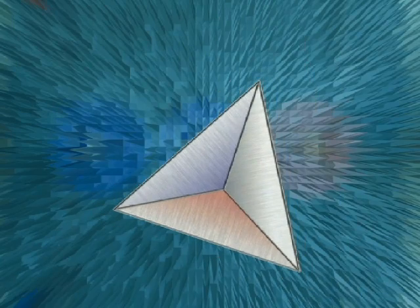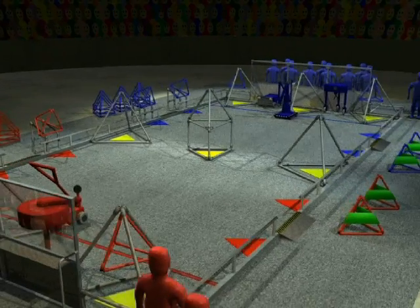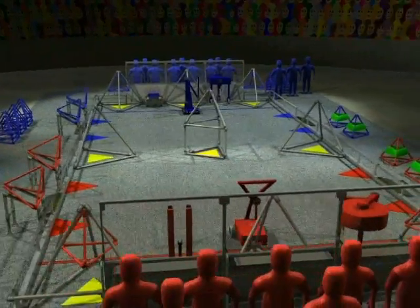Welcome to the 2005 FIRST competition. This year's game is known as Triple Play. The game is played on a 27 by 54 foot rectangular field.